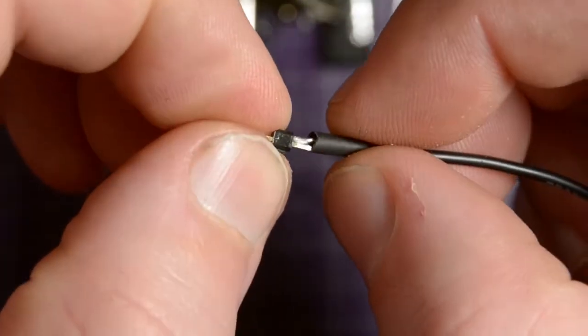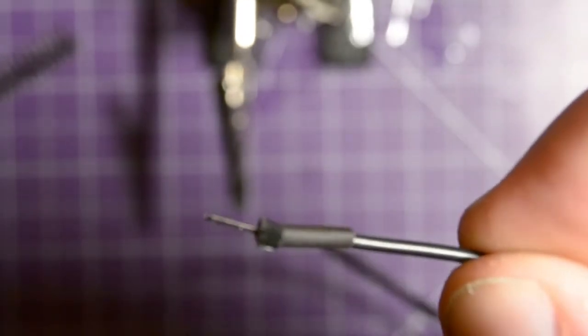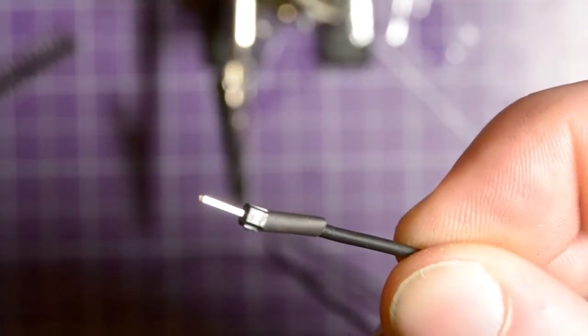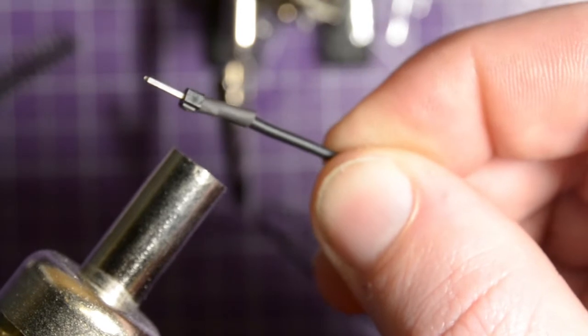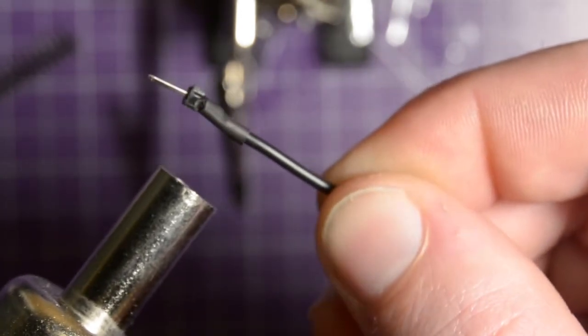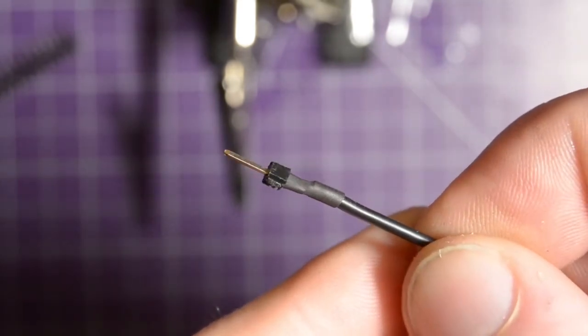And now I'm going to put the heat shrink sleeve over it. If it fits over my mess I made here. Let's see. Yep, there it goes. It's on. And now I'm just going to shrink it down. I have a hot air gun. It's actually a SMD reflow station. I'm just going to shrink it down. And that's what it looks like.